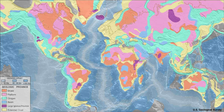Most terrestrial planets have fairly uniform crusts. Earth, however, has two distinct types: continental crust and oceanic crust. These two types have different chemical compositions and physical properties, and were formed by different geological processes.